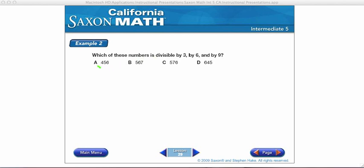We already know that it's not A, it's not B, so let's keep checking. 576. We'll check for 3, 6, and 9.